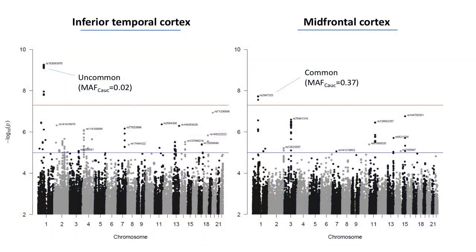Now to the genomics. This Manhattan plot shows statistical evidence across the genome for single variants associated with each of the two SPAM measures associated with pathology — inferior temporal cortex and midfrontal cortex. Despite being enormously underpowered with 225 subjects, this was designed as an exploratory analysis — very few datasets of this type exist. We found one genome-wide hit for midfrontal cortex and another for inferior temporal cortex, both on chromosome 1 but at independent loci.